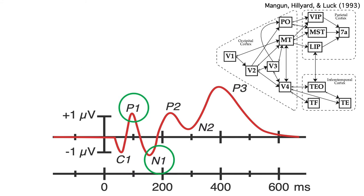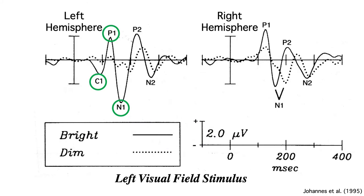The P1 and N1 waves reflect the combination of many different brain areas, most of which are in higher level areas of visual cortex. As you might expect for electrophysiological signatures of sensory processing, the C1, P1, and N1 waves are highly sensitive to the physical properties of the stimulus, such as brightness.